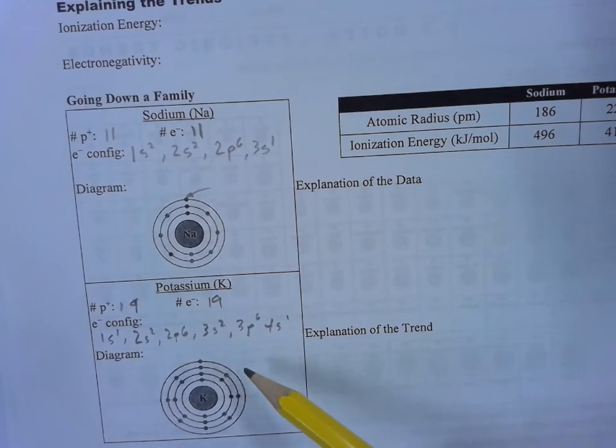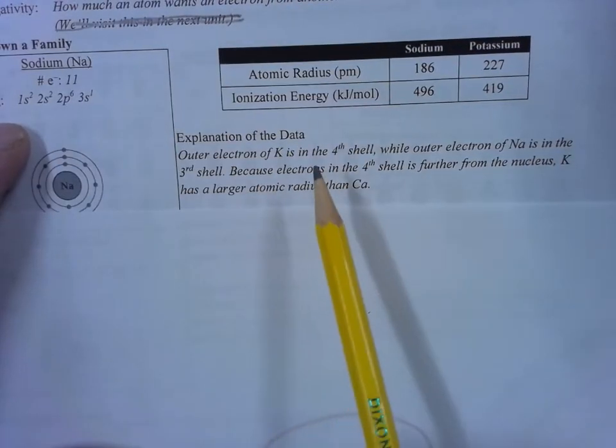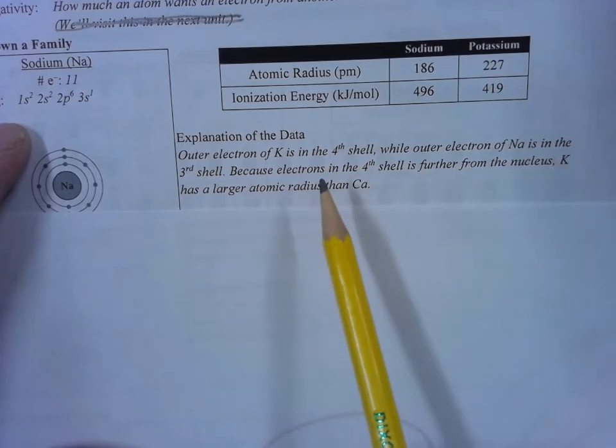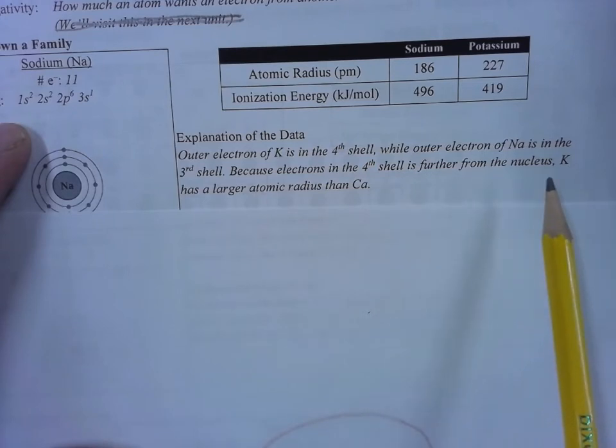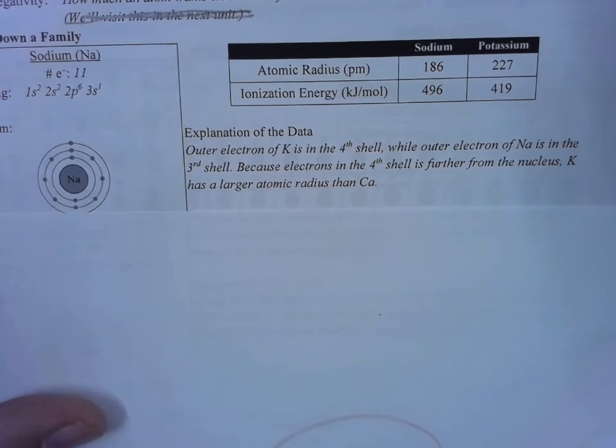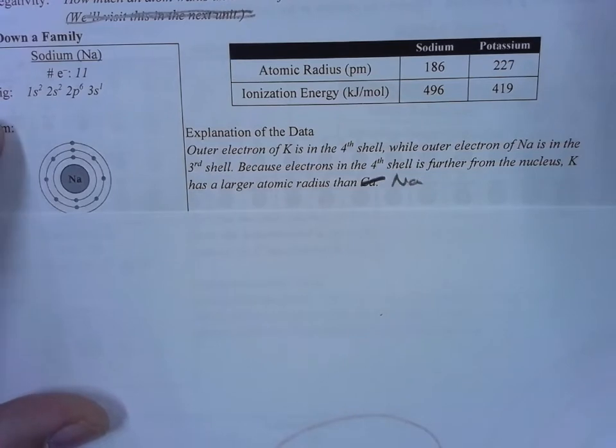Now let's explain what just happened. We've got an extra shell here. This electron is further away from the nucleus. It's got a lower ionization energy, and that gives it a larger atomic radii. The outer electron of K is in the fourth shell, while the outer electron of sodium is in the third shell. Because electrons in the fourth shell are further away from the nucleus, K has a larger atomic radius than Na.